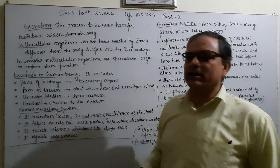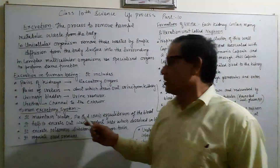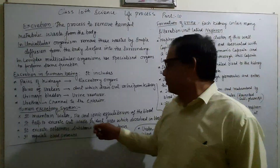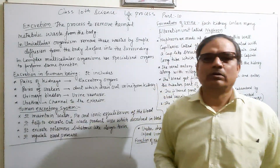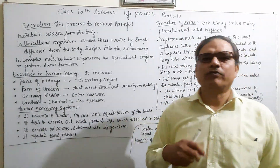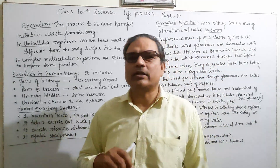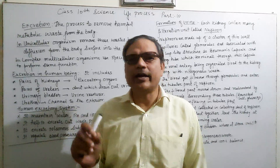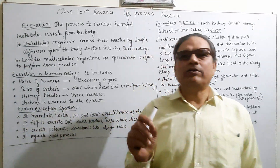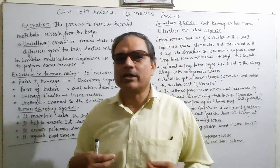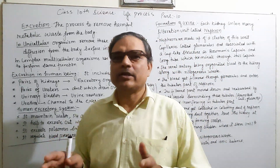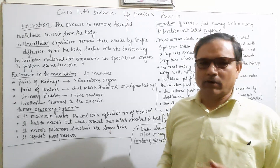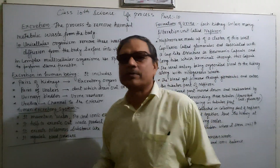The human excretory system is useful because it maintains water balance in our body and regulates pH — the salt solution indicating whether the nature of the solution inside our body is acidic, basic, or neutral. It also regulates ionic substances in our body.